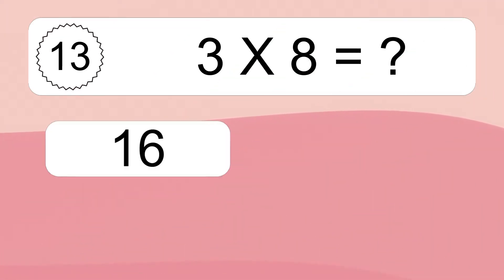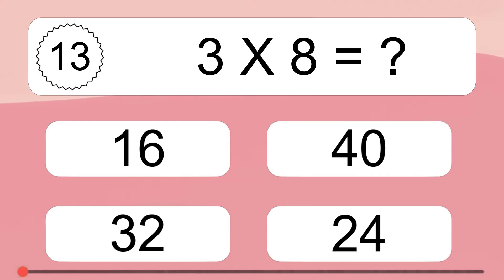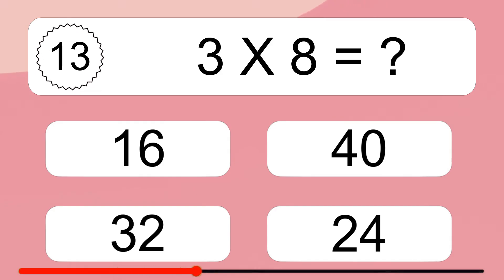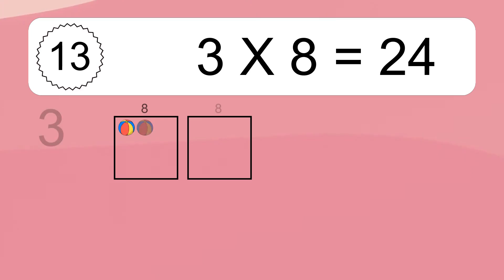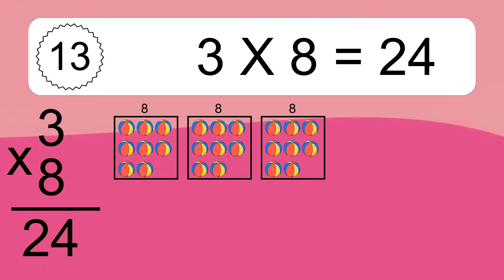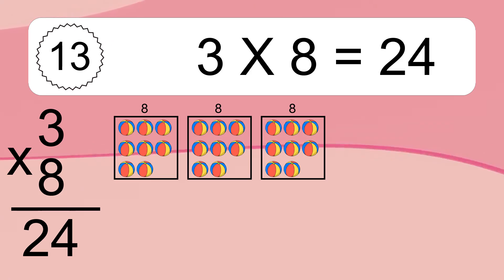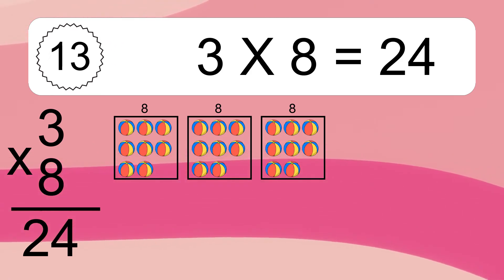3 times 8 equals what? We have 4 boxes and each box has 8 colorful balls inside. If you count all the balls in all the boxes together, you will have 3 times 8 balls. This equals 24 balls.